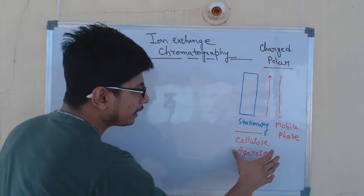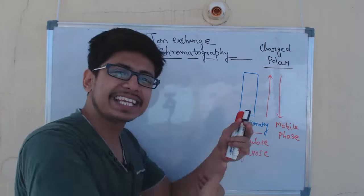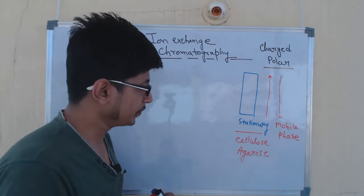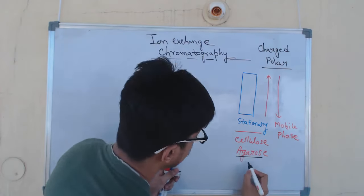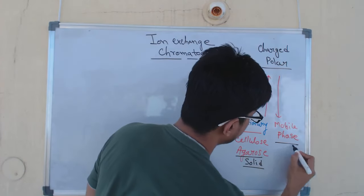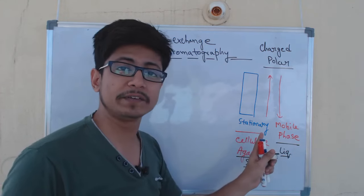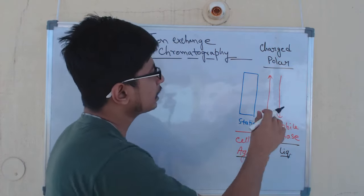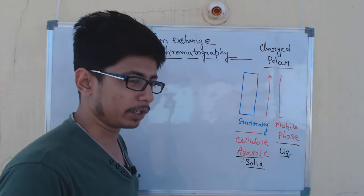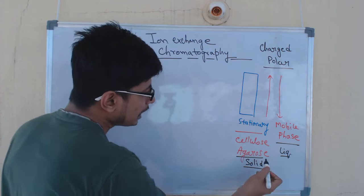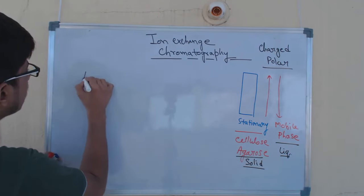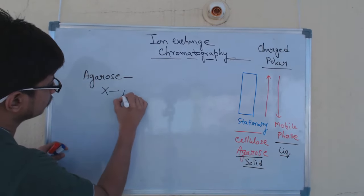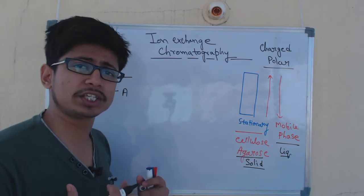In ion exchange chromatography, the idea is the exchanging of charged or polar molecules from the mobile phase. The stationary phase is solid — for example, agarose — while the mobile phase is liquid. The liquid contains all the molecules including the charged and polar molecules we want to separate. We take the agarose, represent it as X, and attach an ion or charged molecule to it.